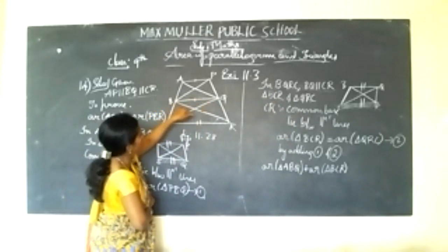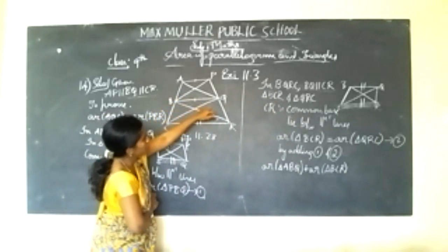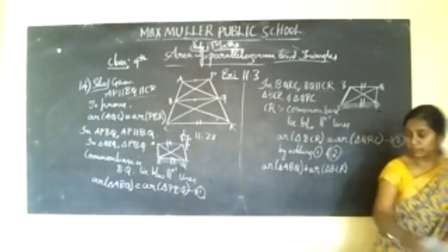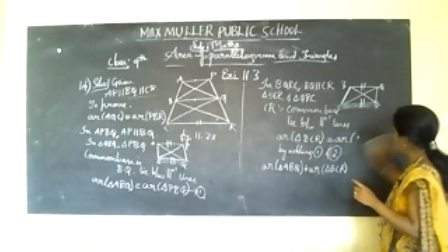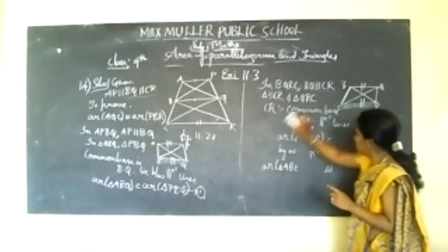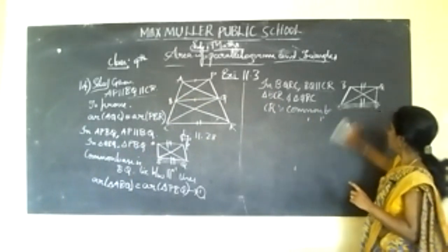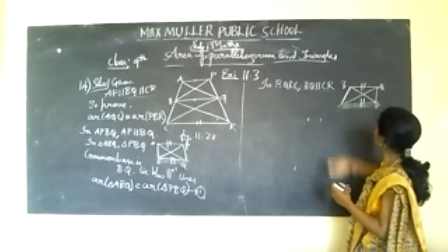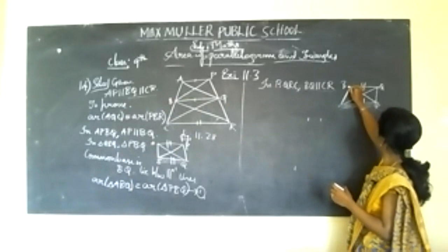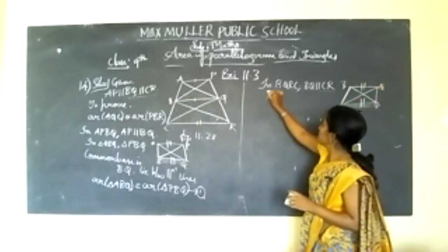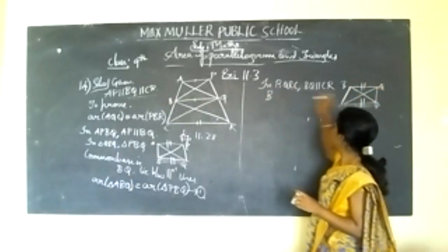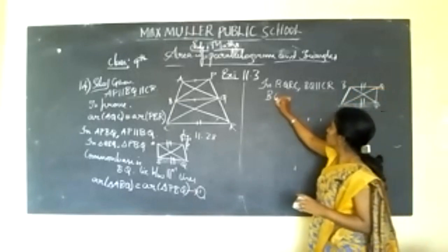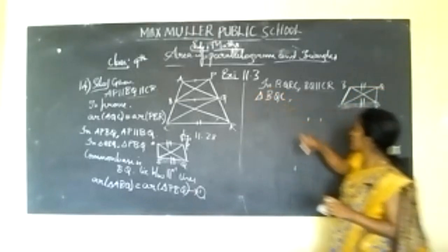Since BQ is parallel to CR, you have to take triangle BQC instead of BCR. Consider triangle BQC and triangle BQR.